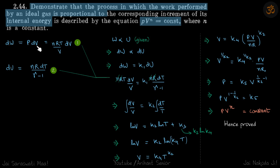So DW is equal to PDV. So why are we doing this for DW and DU? Why not for W and U?